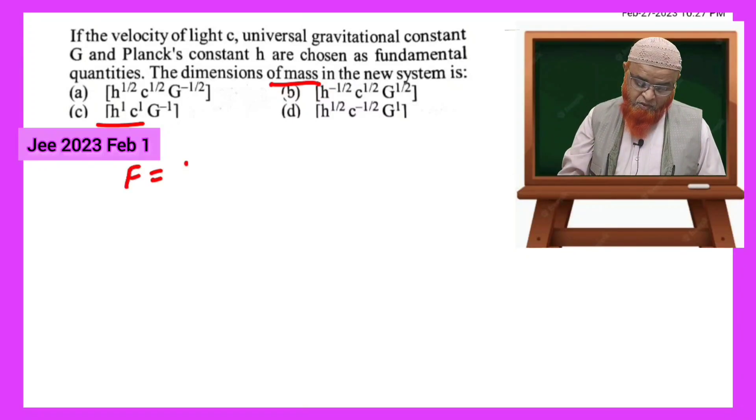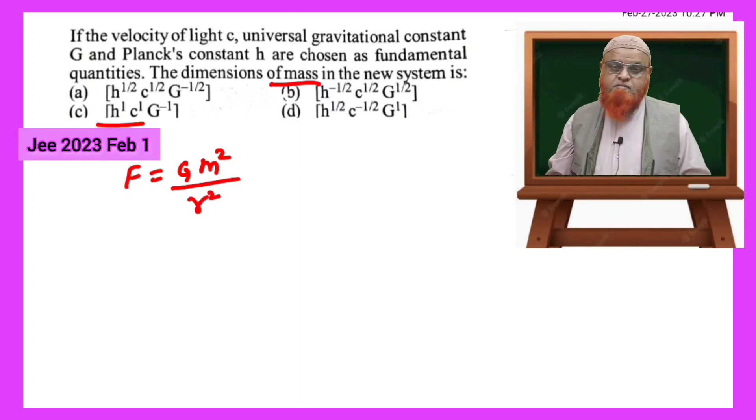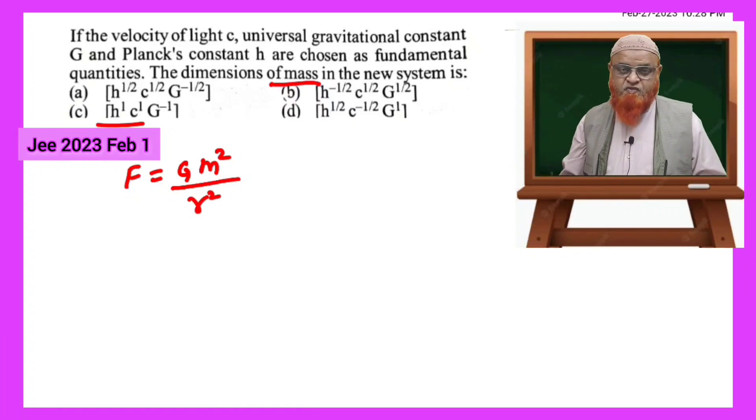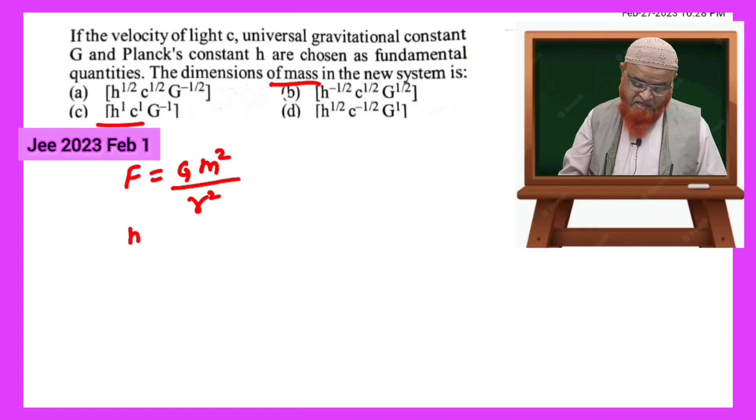So F is equal to G m1 m2, which can be taken as m squared by r squared. He is asking us to find out the mass, so let us consider here mass.